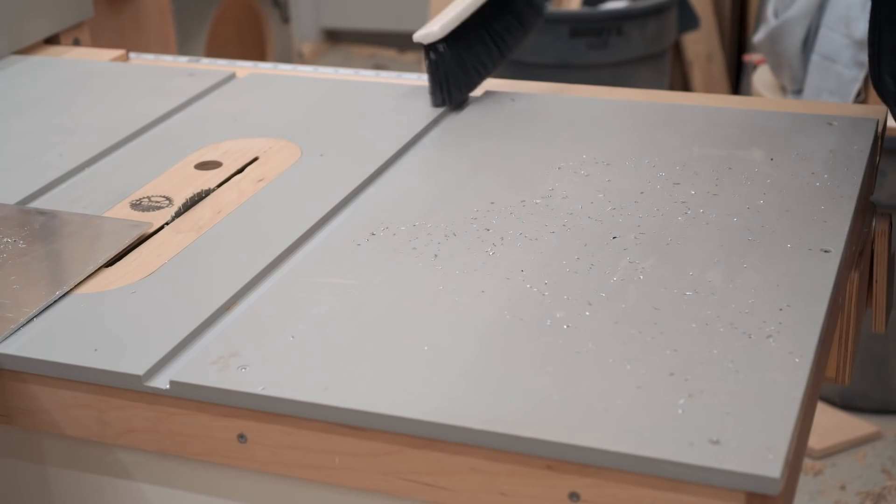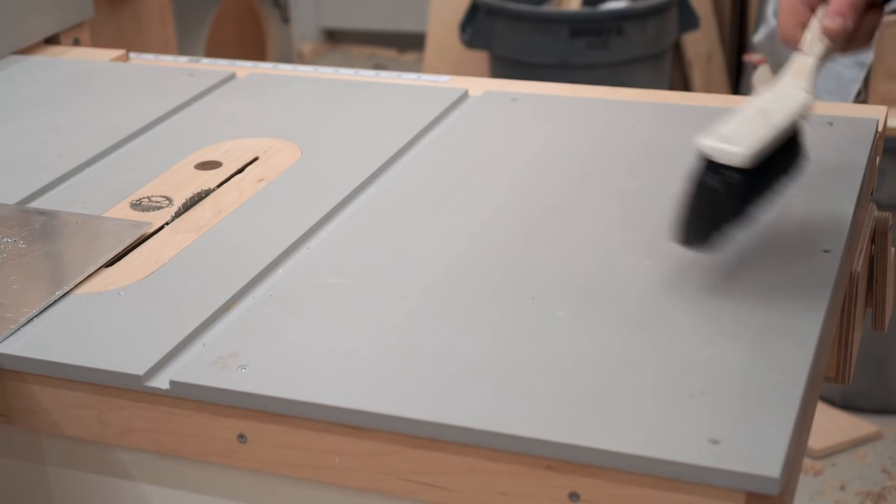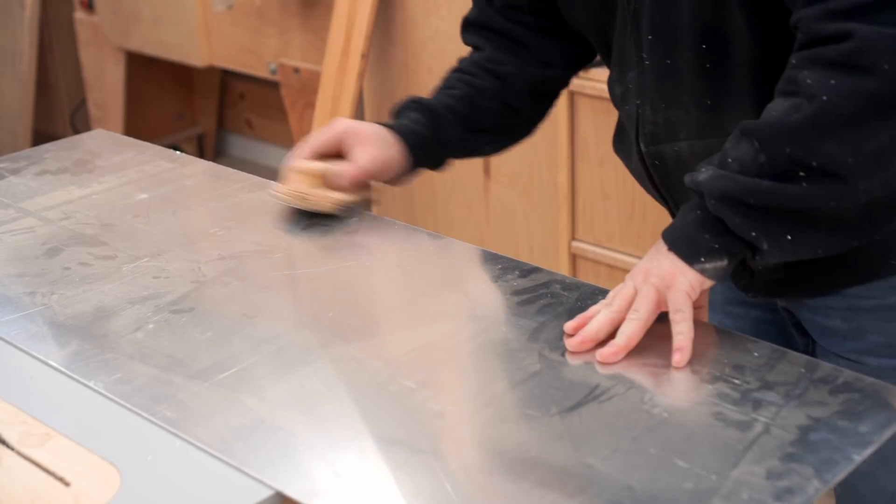The other big difference between aluminum and wood is that you've got to be cleaning up these chips constantly. Otherwise, they're going to make scratches in the aluminum and they're going to be hard to get rid of.